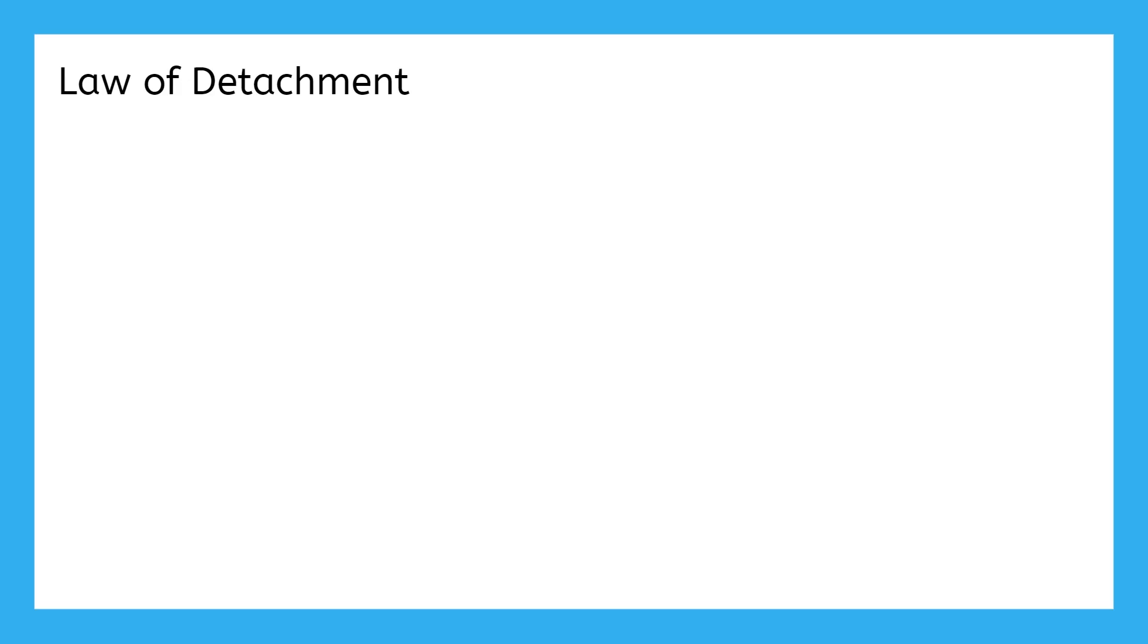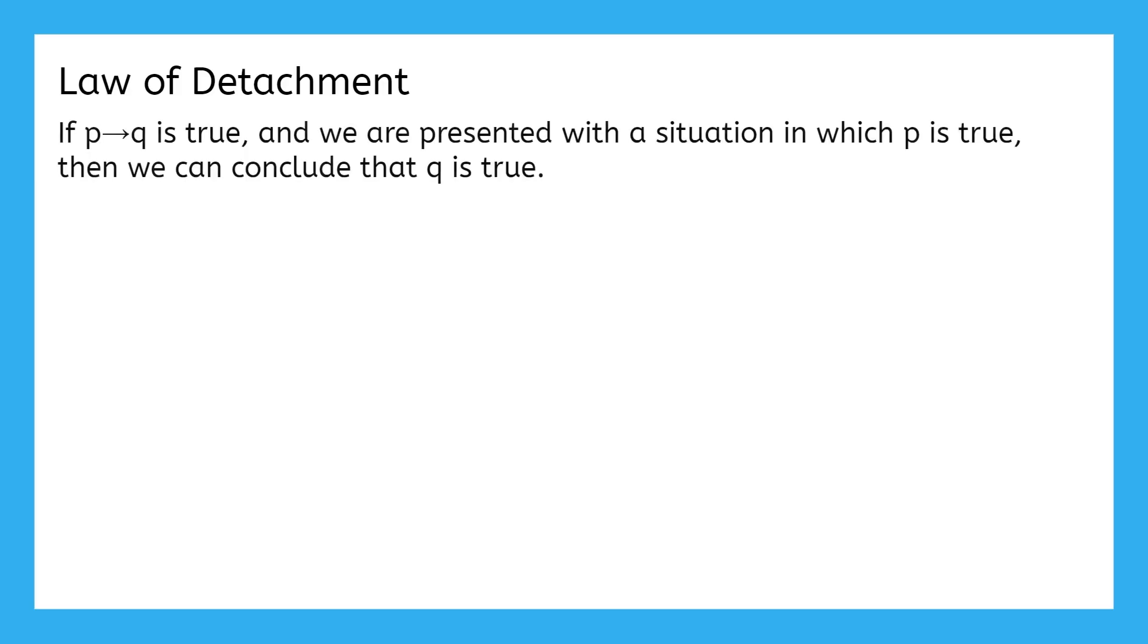The law of detachment lives up to its name. It says, if P implies Q is true, and we're presented with a situation in which P is true, then we can conclude that Q is also true.